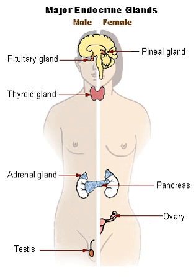A neuroendocrine system has been observed in all animals with a nervous system, and all vertebrates have a hypothalamus-pituitary axis. All vertebrates have a thyroid, which in amphibians is also crucial for transformation of larvae into adult form. All vertebrates have adrenal gland tissue, with mammal cells unique in having it organized into layers. All vertebrates have some form of a renin-angiotensin axis, and all tetrapods have aldosterone as a primary mineralocorticoid.